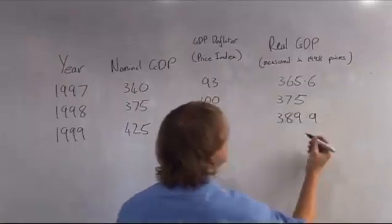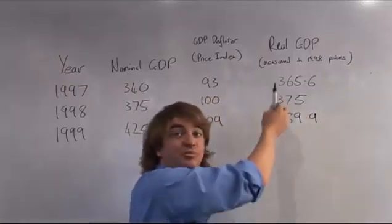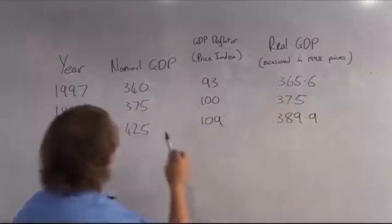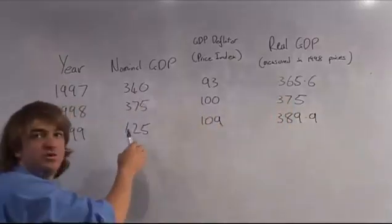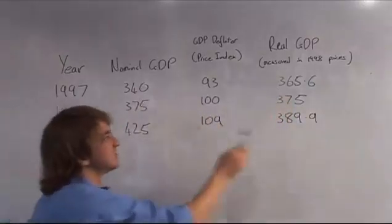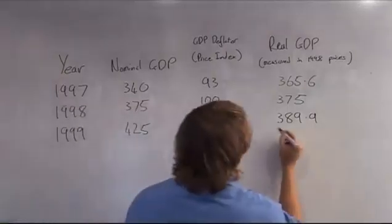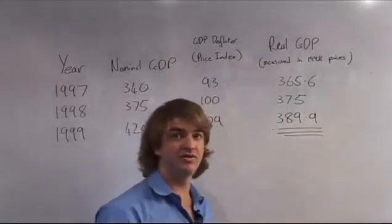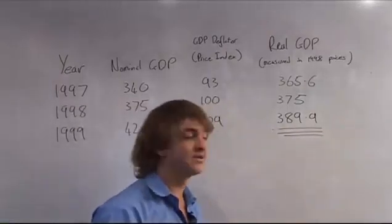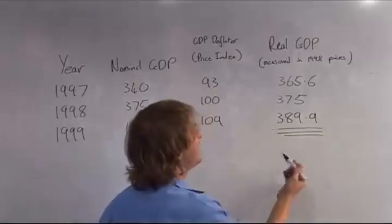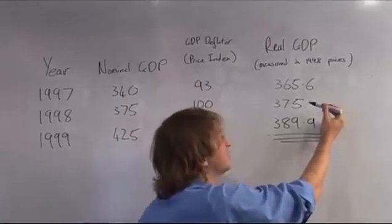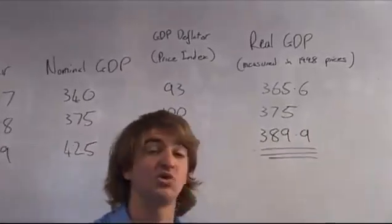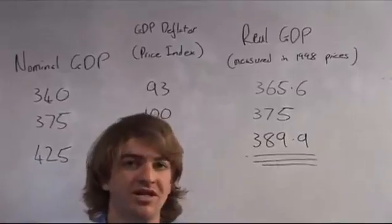So this gives you the actual increase in production over those years, whereas nominal GDP gives you the increase in the value of production. Real GDP is far more important — you've got to see the actual value of real GDP. From here, you can take percentage changes of real GDP to work out your actual growth rate in the economy.